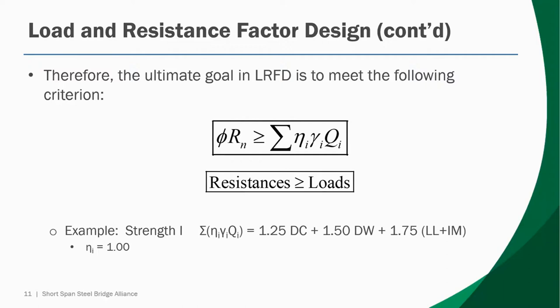An example of a load combination is Strength 1, which relates to normal vehicular use. Isolating the load components most common to short span steel bridge design: DC is the dead load of structural components and non-structural attachments; DW is the dead load of the wearing surface and utilities; and LL plus IM is the vehicular load model combined with dynamic load allowance. AASHTO LRFD specifications also employ eta factors to account for ductility, redundancy, and operational importance, though in most cases these values can be taken to be 1.